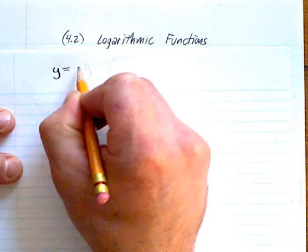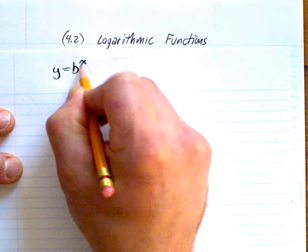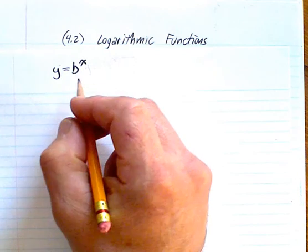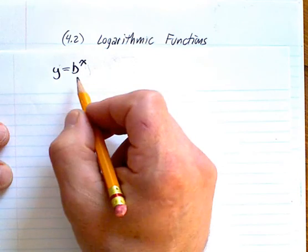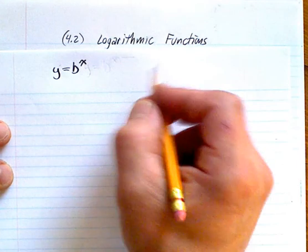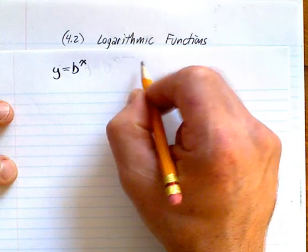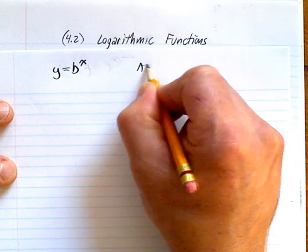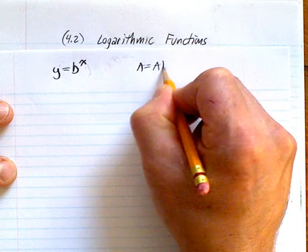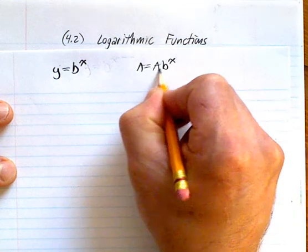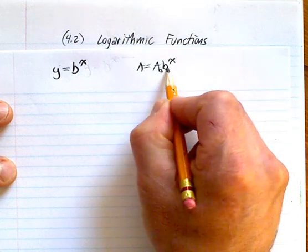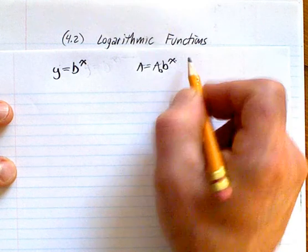And then one that dealt with what exponential functions were and then solving exponential equations, making the same base. So that's your A0, initial amount, your multiplication factor, and the number of times it's multiplied.